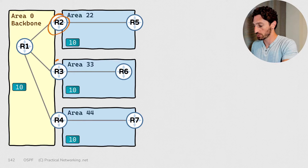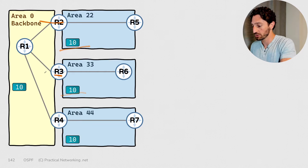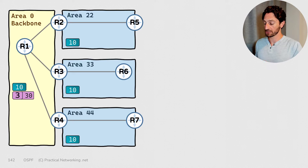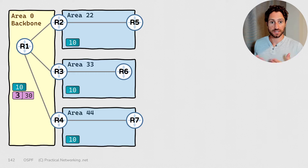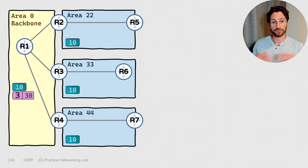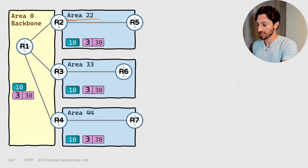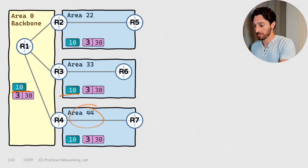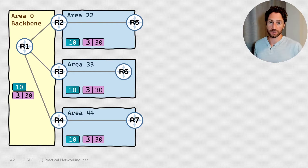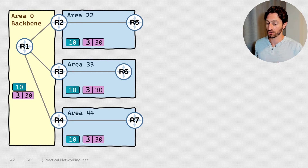Router 2, router 3, and router 4 are each going to be sending 10 type 3 LSAs into area 0, meaning area 0 is going to contain 30 type 3 LSAs total — one type 3 LSA for each IP subnet that exists in a foreign area. Since there will be one type 3 LSA for every IP subnet in a foreign area, there will also be 30 type 3 LSAs inside areas 22, 33, and 44. From the perspective of area 44, there are 10 IP subnets in each of the other three areas, so there will be 30 type 3 LSAs inside area 44 accounting for each of those IP subnets.